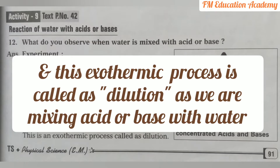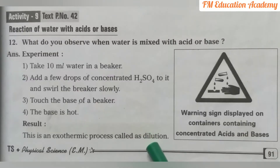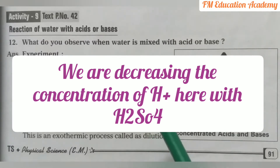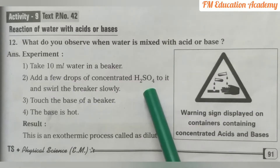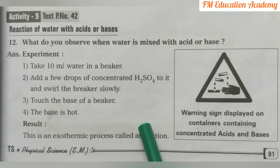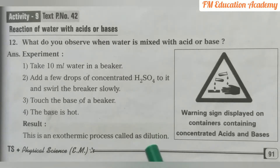So the process of dissolving an acid or base in water is called an exothermic process, and this process is also called dilution — as we are mixing water to acid or base, we are decreasing the concentration of H⁺ ions. With this acid (H₂SO₄), we observe that heat is liberated.